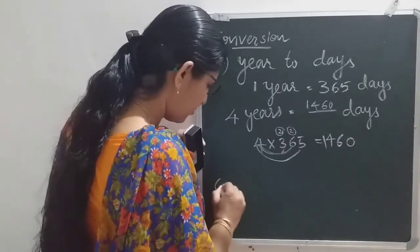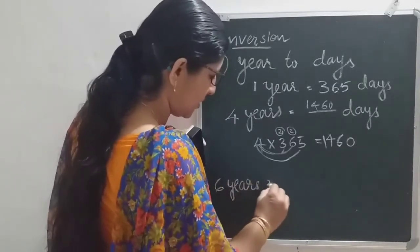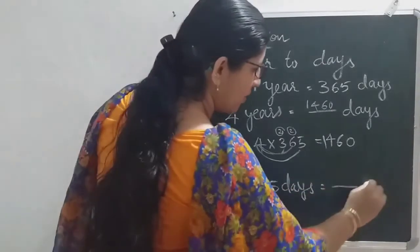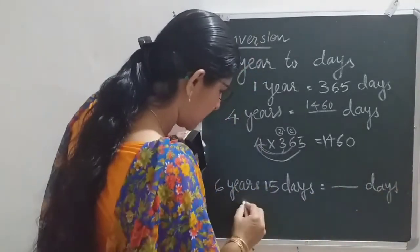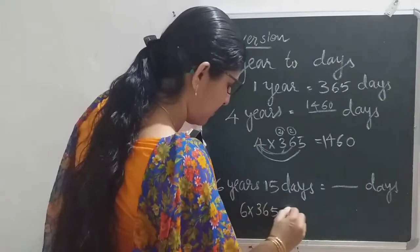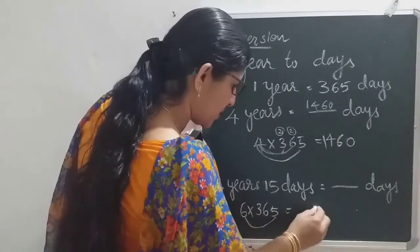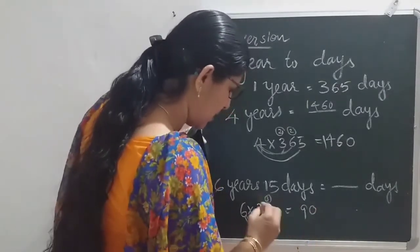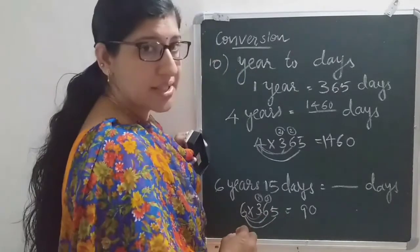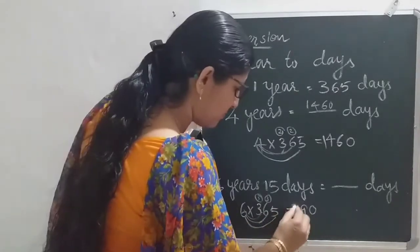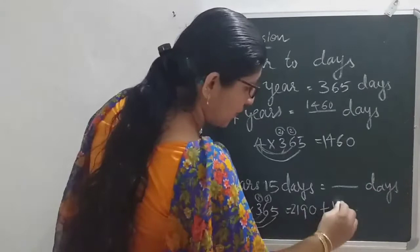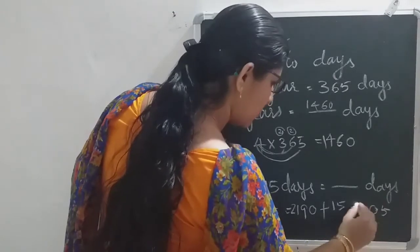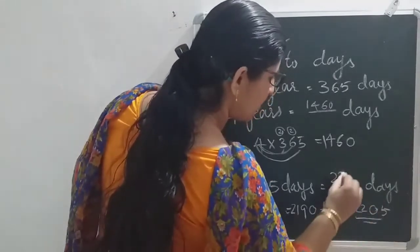If it is 6 years 15 days, how many days? 6 years means 6 into 365. 6 fives are 30, carry 3; 6 sixes are 36 plus 3 is 39, carry 3; 6 threes are 18 plus 3 is 21. That gives 2190. Plus this 15 days: 0 plus 5 is 5, 9 plus 1 is 10, carry 1; 1 plus 1 is 2, 2. So the answer is 2205 days.